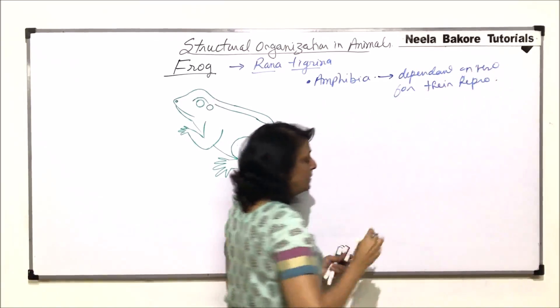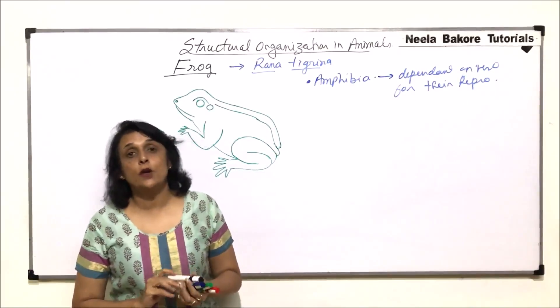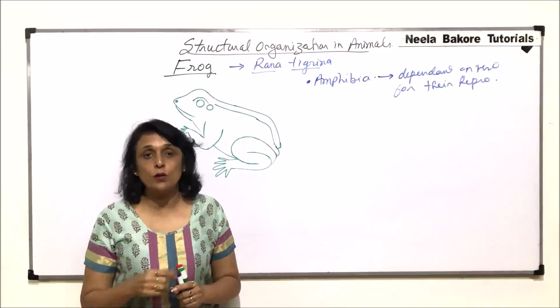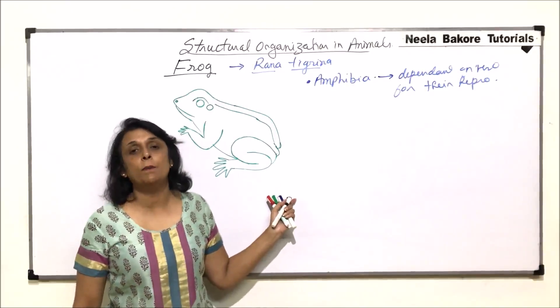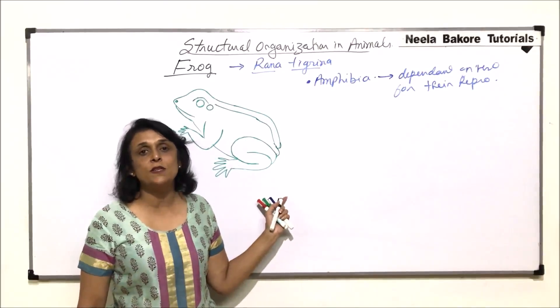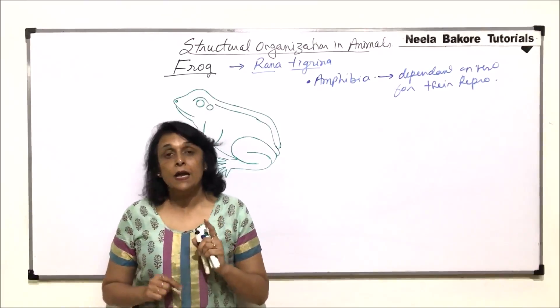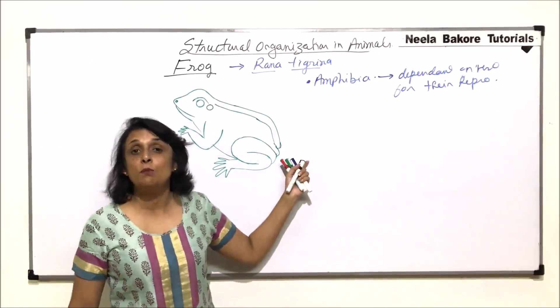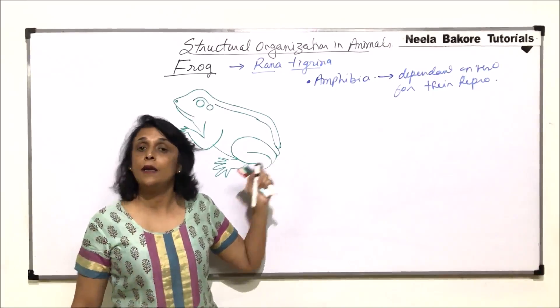That means fertilization takes place in water. So if fertilization doesn't take place in water or if water is not there, their life cycle will not be completed. So in simple language when we describe amphibians, we say they can live on land as well as in water. But in true sense, amphibian means the one which is dependent on water for its reproduction.